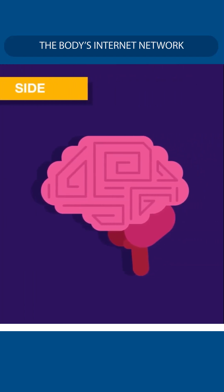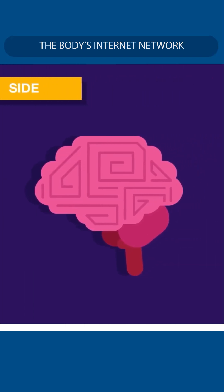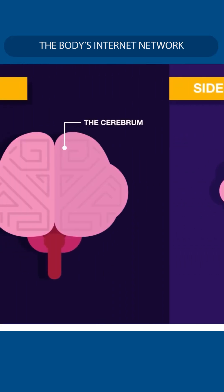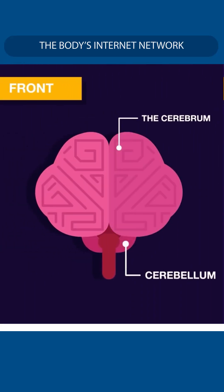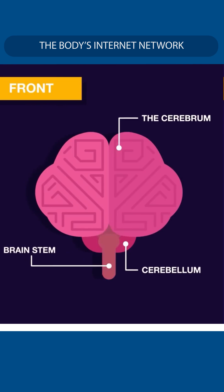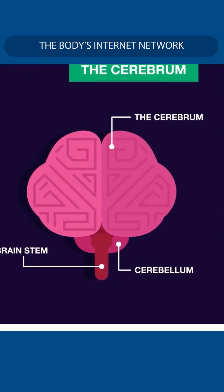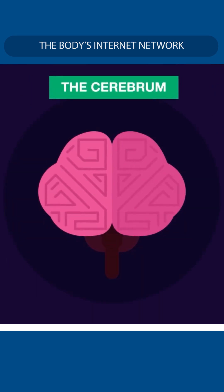Our brain can be divided into three main parts: the cerebrum, the cerebellum, and brainstem. The cerebrum is the largest part of the brain, which can be further divided into right and left halves, called hemispheres.